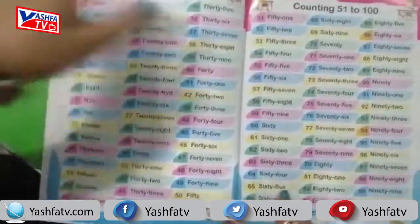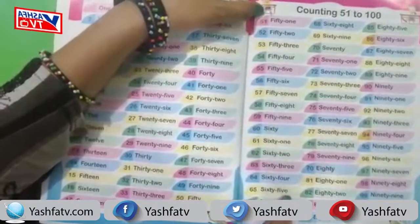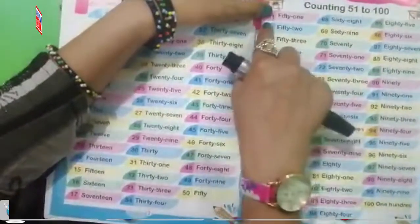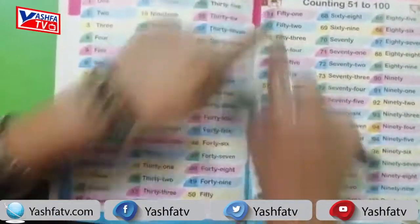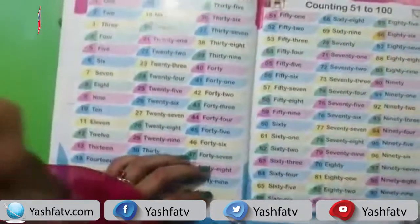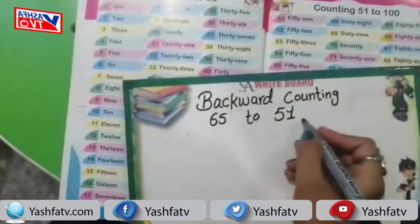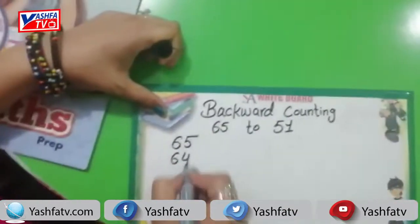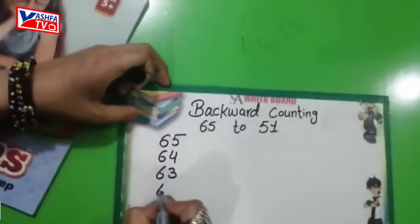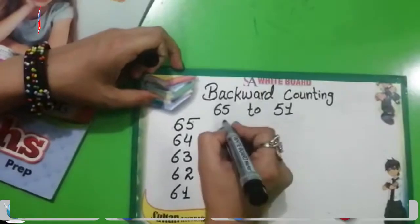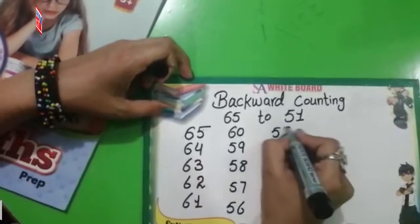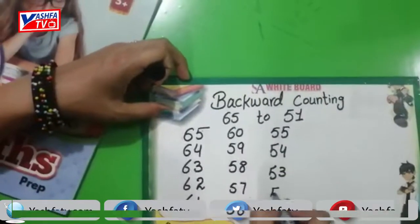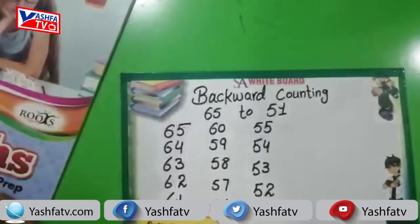Today students we have learned and discussed the counting from 51 to 65 with numbers and number names. We also learn the backward counting from 65 to 51. So we write: 65, 64, 63, 62, 61, 60, 59, 58, 57, 56, 55, 54, 53, 52, and 51.